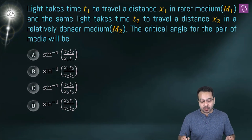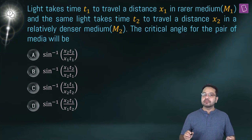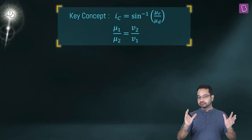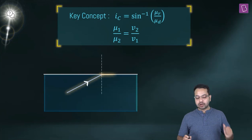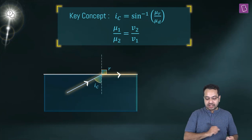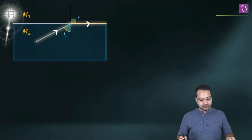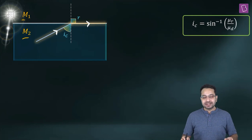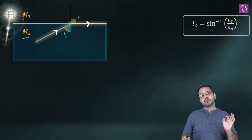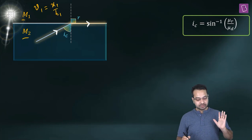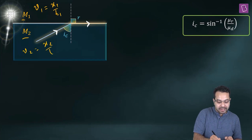Light takes time T1 to travel distance X1 in rarer medium M1, and the same light takes time T2 to travel distance X2 in denser medium M2. The critical angle for the pair of media is asked. The key concepts: critical angle = sine⁻¹(μ_R / μ_D), and μ₁/μ₂ = v₂/v₁. From the given data, the speed in M1 is X1/T1 and the speed in M2 is X2/T2.